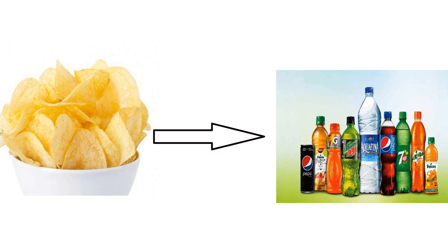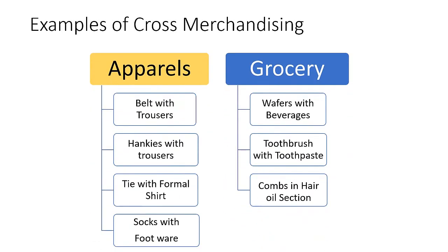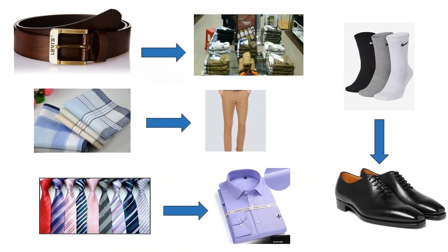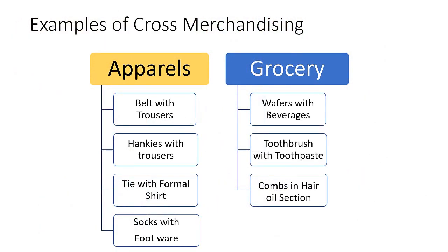Now let us see examples in various categories. In the apparel category, cross merchandising can be done by displaying belts with trousers, hankies with trousers, ties with formal shirts, socks with footwear, and deodorants with casual shirts or trousers.